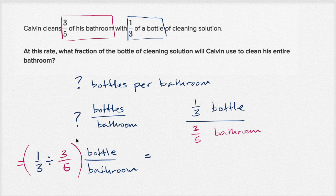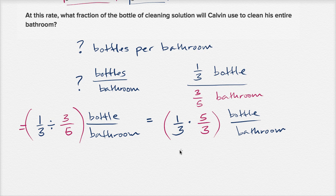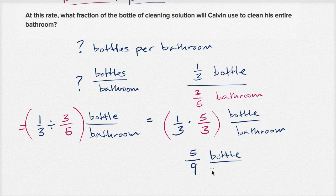One-third divided by three-fifths is the same thing as one-third times the reciprocal of three-fifths, so one-third times five-thirds, bottle per bathroom. We multiply the numerators: one times five gives us five, and the denominators: three times three gives us nine. So it's going to be five-ninths of a bottle per bathroom.